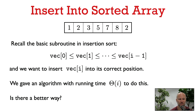Let's go back to the basic subroutine in insertion sort. We have a vector which is already sorted, except potentially for the last element, and we want to put this last element into the correct place so that the whole vector is sorted. When the array has size i, we gave an algorithm with running time theta of i to do this. The question we're going to look at in this video is: is there a better way to do this?